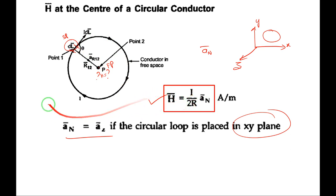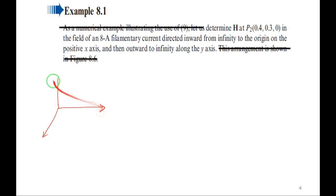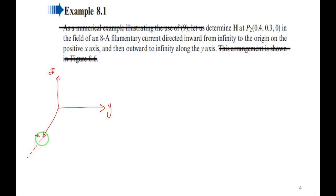Now the first problem: Determine the magnetic field intensity H at point P2(0.4, 0.3, 0) in the field of an 8-amp filamentary conductor directed inward from infinity to the origin on the positive x-axis. We draw the diagram with x, y, z axes. Along positive x-axis, the current flows from infinity toward the origin — that is conductor 1, with I = 8 amps.